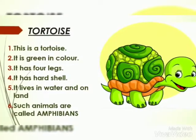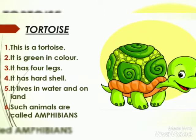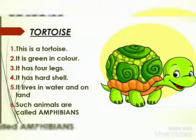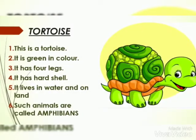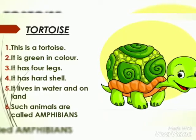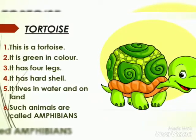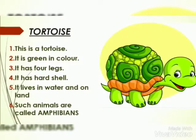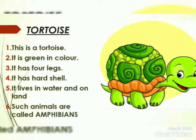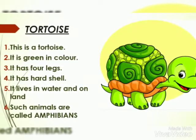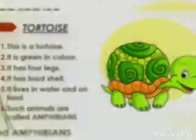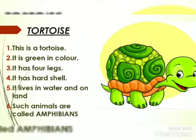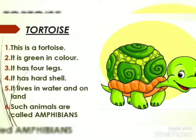Such animals are called amphibians. The new word is amphibians. Amphibians means those animals who live in water and on land. For example, tortoise and crocodile.